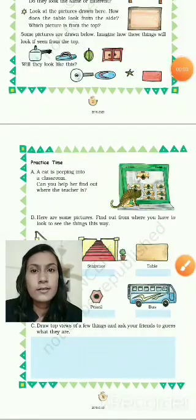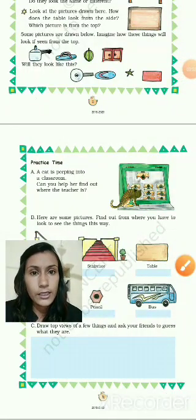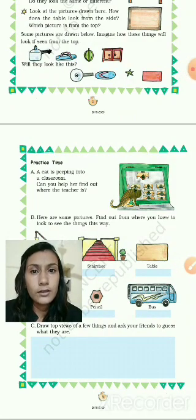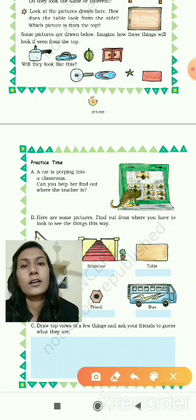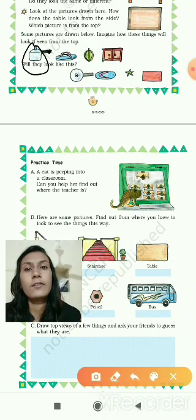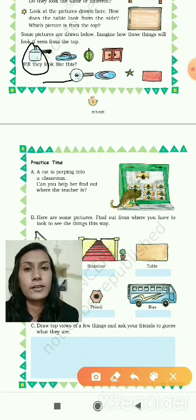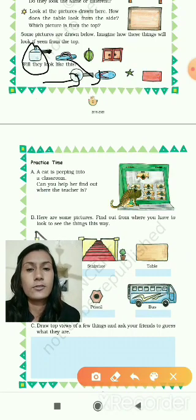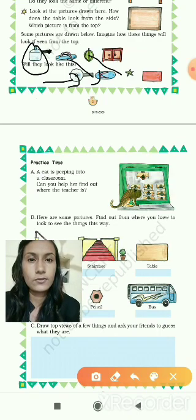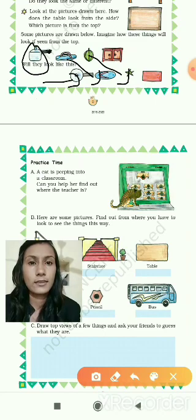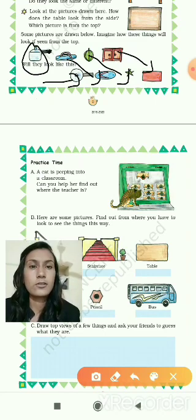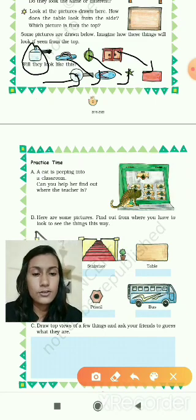Some pictures are drawn below. Imagine how these things will look if seen from the top. Here is a cooker — if we see it from the top, it will look like this. This slipper also looks like this from the top. This fruit also looks like this from the top. And this cupboard also looks like this from the top side.